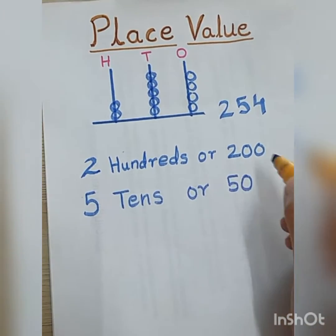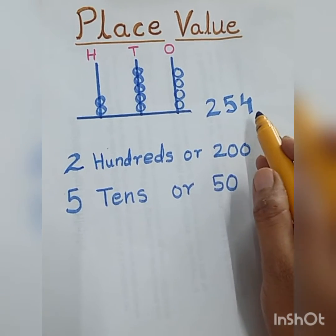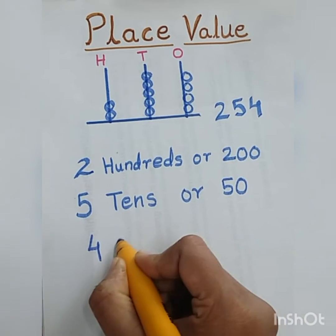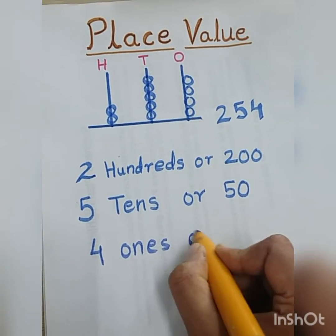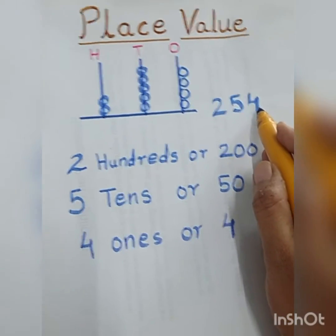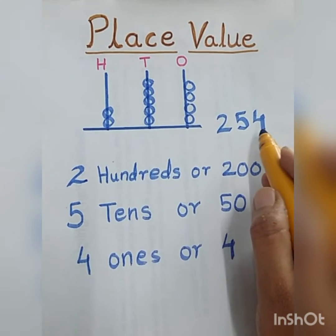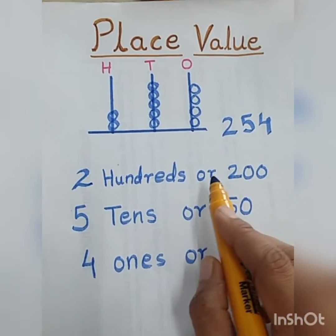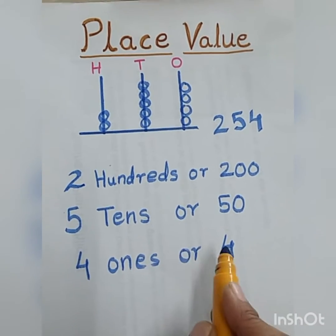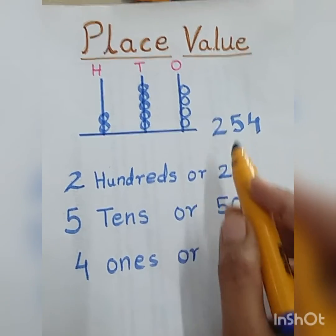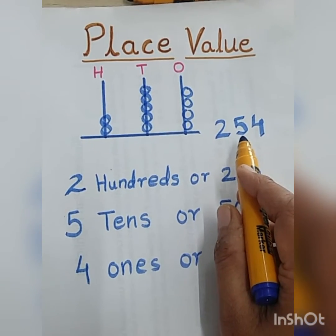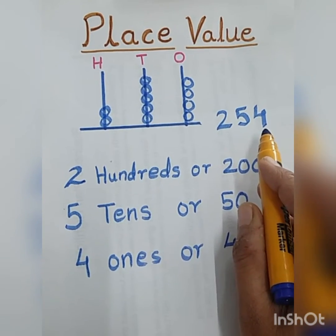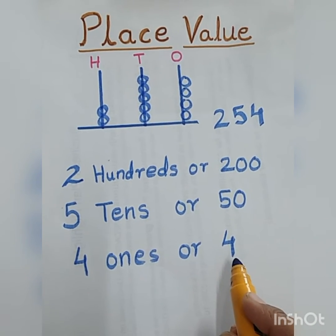50 is the place value of number 5. After this I have number 4. 4 is at the ones place, so I will write 4 ones, or 4 — that is the place value of number 4. So according to the position of the number, whether it is at ones, tens, or hundreds place, we can write the place value of that particular digit.